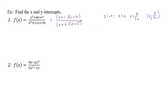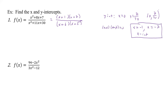For the x-intercepts, we set the numerator equal to zero. So x plus 1 times x plus 7 equals 0, giving us x equals negative 1 and x equals negative 7 as the two x-intercepts. So we get two x-intercepts and one y-intercept, and that's all we need to find the intercepts.